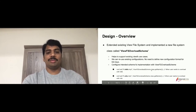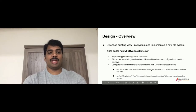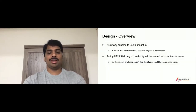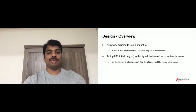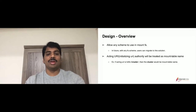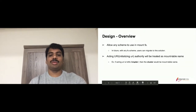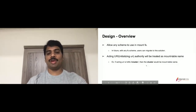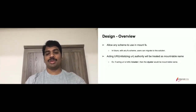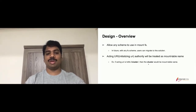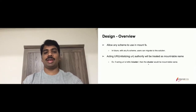Any Hadoop-compatible file system scheme can now be used with ViewFS. The acting URI that initializes the file system — the URI's authority part — should be your mount table name. In the mount table configuration you will provide the mount table name and the key name so that the ViewFileSystemOverloadScheme can identify the respective mount table configuration for you. We'll look at how the key part looks in the next slides.